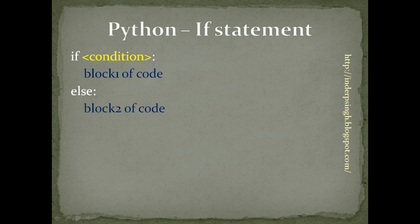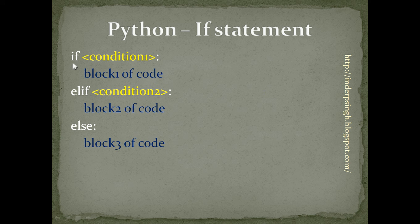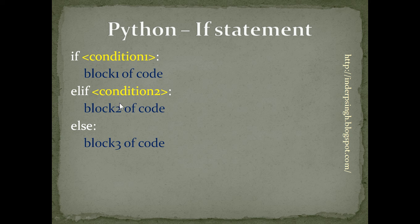Now let us see the last format of the if statement. Here we have if followed by a condition and colon, the if block of code, then elif — meaning else if — where we can give some other condition. If condition 2 is true, then block 2 of code is run. There can be multiple elifs in the if statement. If none of the preceding conditions is true, then the else block — block 3 — is run.